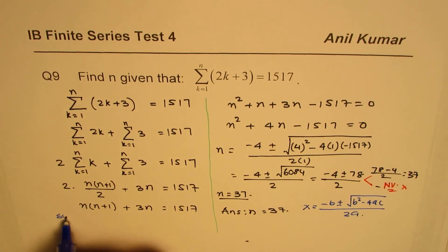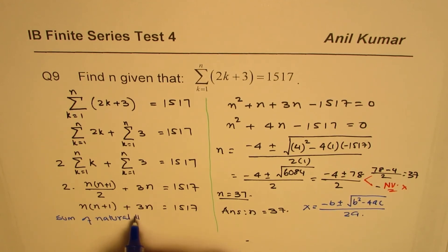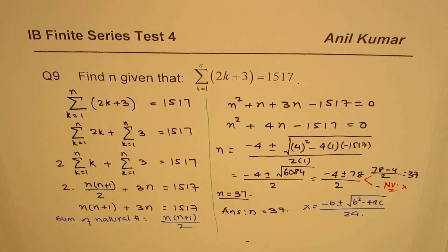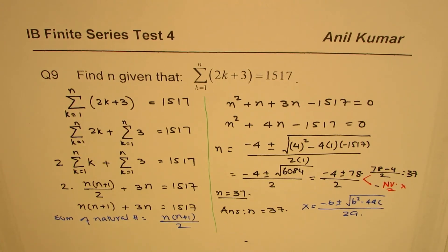And here, sum of natural numbers is n times n plus 1 divided by 2. So we use these two formulas to find the solution. And I hope the steps are absolutely clear. Thank you and all the best.